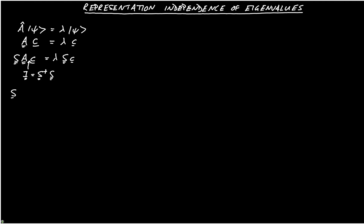So we have S acting on A acting on S dagger acting on S acting on C is equal to lambda S acting on C, and then I just move the brackets so we have S A S dagger acting on S C is equal to lambda S C.